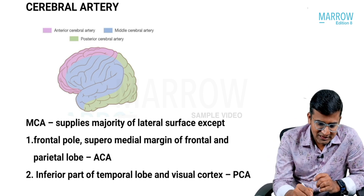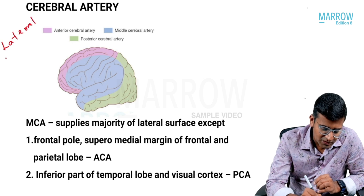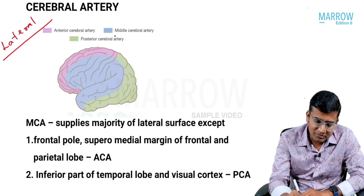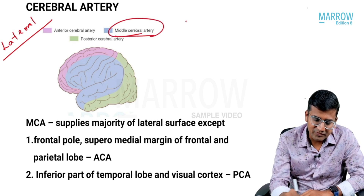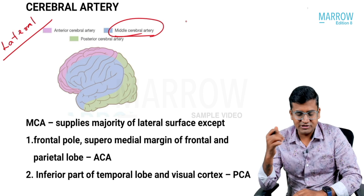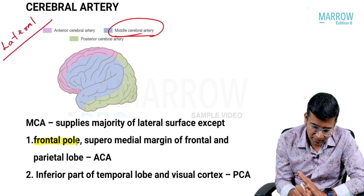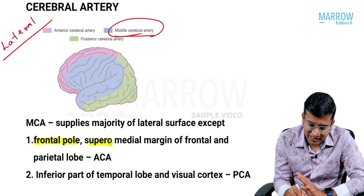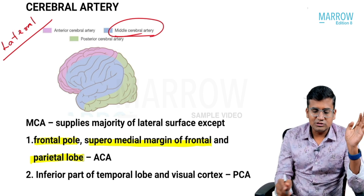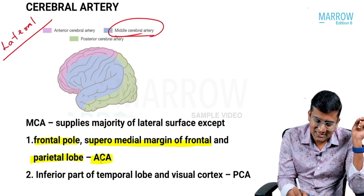This is the lateral view of the cerebrum. The majority of the lateral surface of the cerebrum is supplied by the middle cerebral artery, shown in blue. There are exceptions: the frontal pole and the supramedial margin of the frontal gyrus and the parietal lobe are supplied by the anterior cerebral artery.